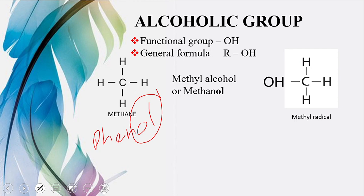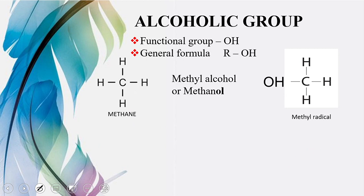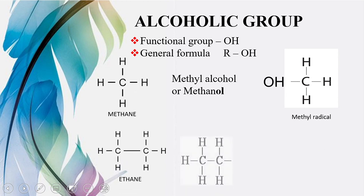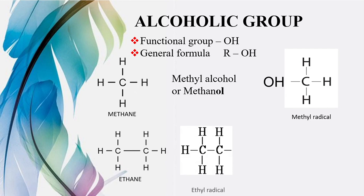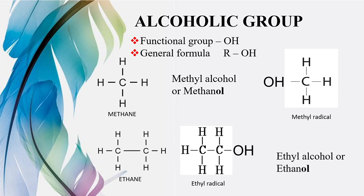Let's take another example: humare paas hai ethane. Ab ethane ka ek hydrogen remove kiya, yeh ban gaya ethyl radical, aur ab is ethyl radical ki us jagah jahan humne hydrogen remove kiya, wahan hum OH add karte hain, to yeh ban jayega ethyl alcohol ya ethanol. Koi bhi naam aapko jo suit kare, wo aap likh sakte hain. Humne methyl se bana methyl alcohol, similarly ethyl radical ke saath alcoholic functional group attach hai.